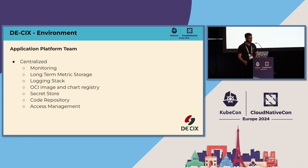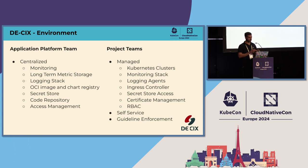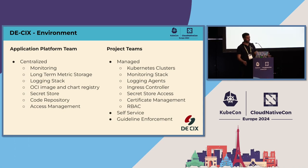Our environment has an application platform team providing centralized services: monitoring, long-term metric storage, a logging stack, an OCI image registry, a secret store, code repository, and more. We try to provide a holistic stack for all teams. Different teams get managed Kubernetes clusters, a monitoring stack, a logging environment, ingress controller, secret store access — all while still being able to do self-service. We want teams to create their own deployments using Kubernetes techniques.